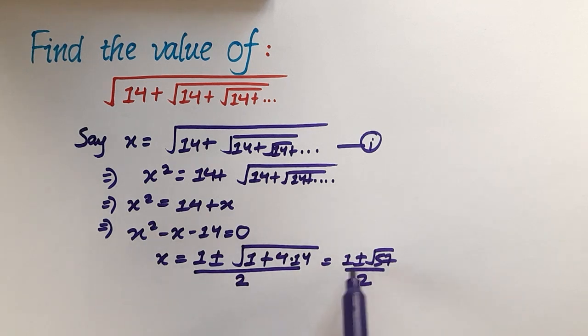x is equal to 1 plus root under 57 over 2, or x is equal to 1 minus root under 57 over 2, and x is equal to 1 minus root under 57 over 2 is a negative value.